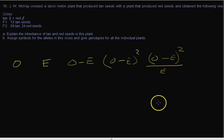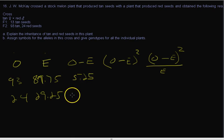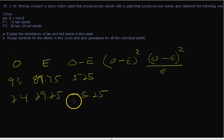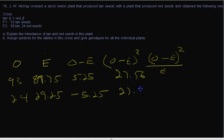In the chi-square table we had observed values 93 and 24, and expected values 87.75 and 29.25. O minus E is 5.25 for tan and minus 5.25 for red. This illustrates why we square it: if some values are over expected and some are under, they'd cancel each other out if we kept the sign. Squaring gets rid of the sign. When we square 5.25 we get 27.56 in both cases.